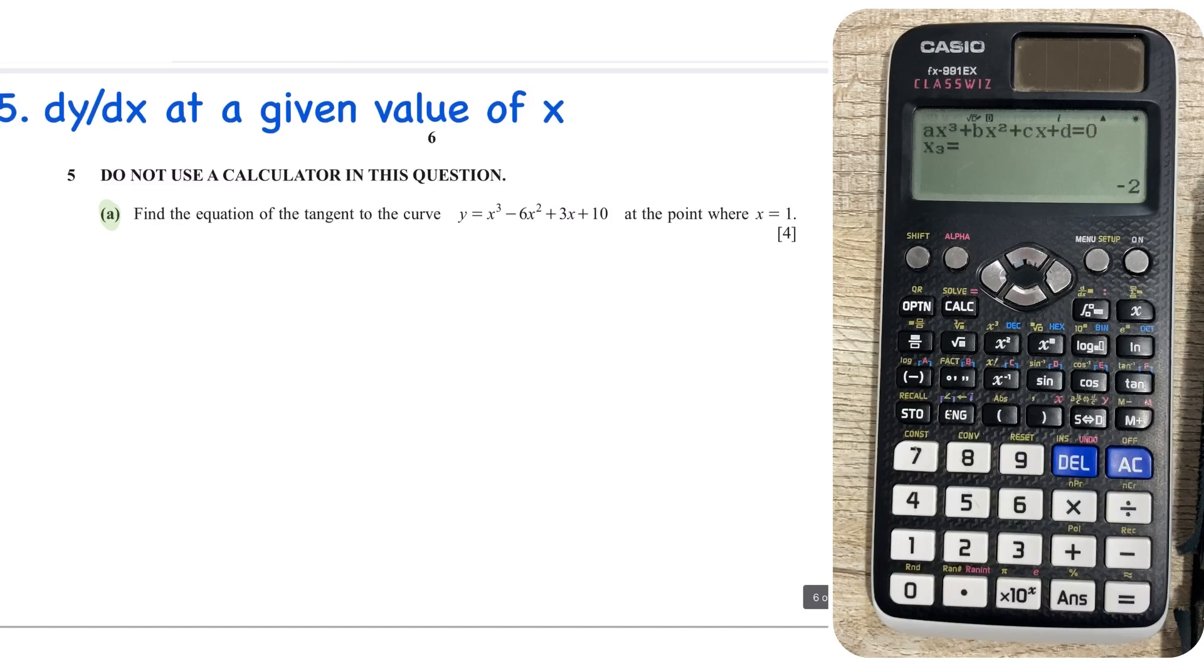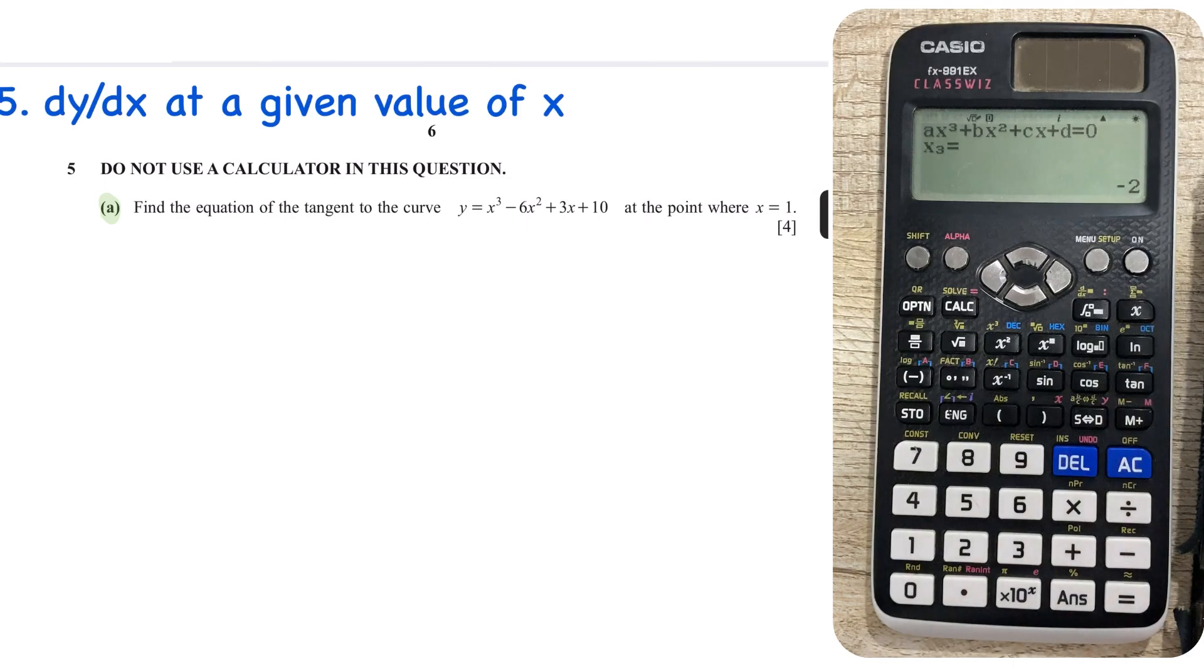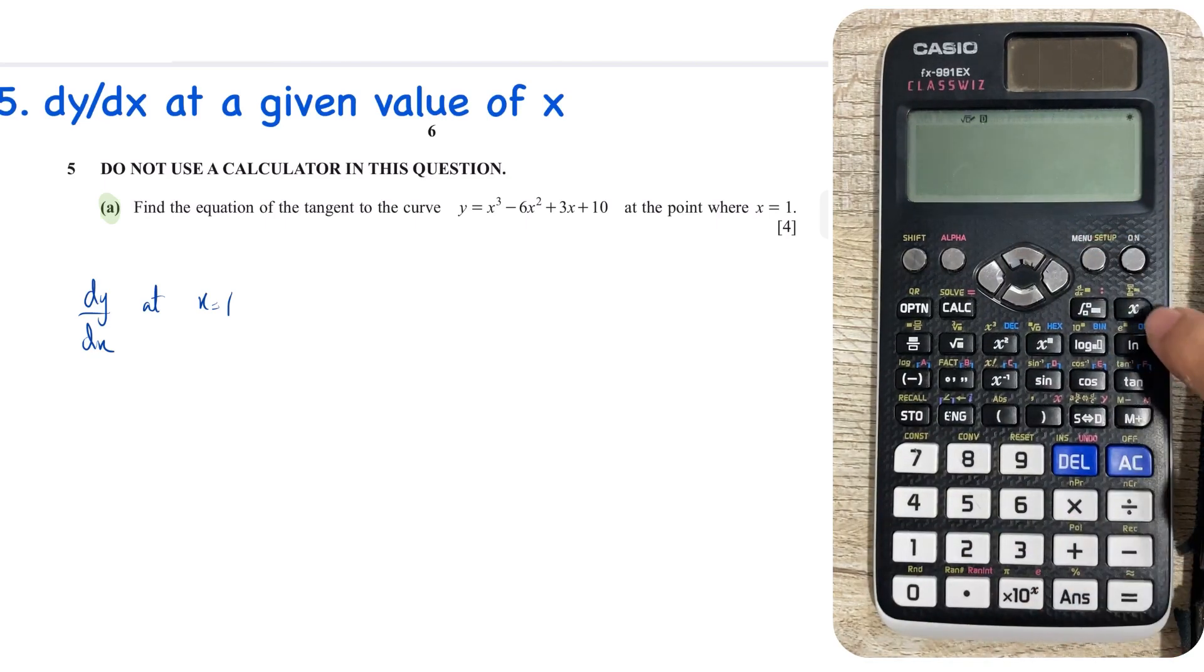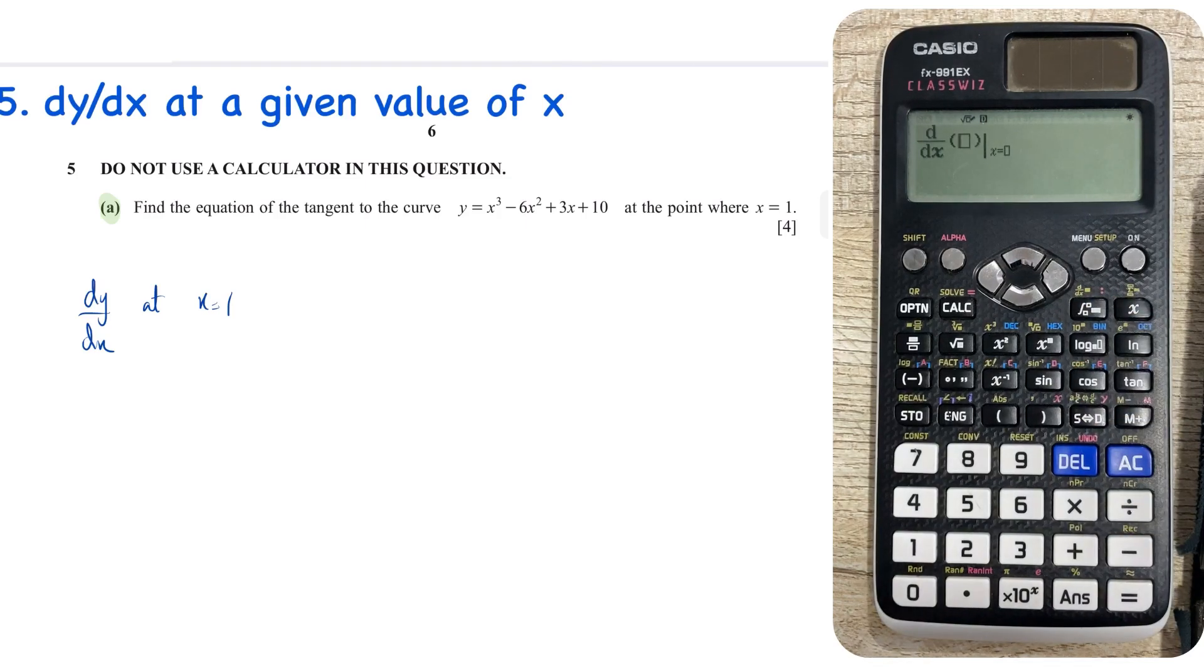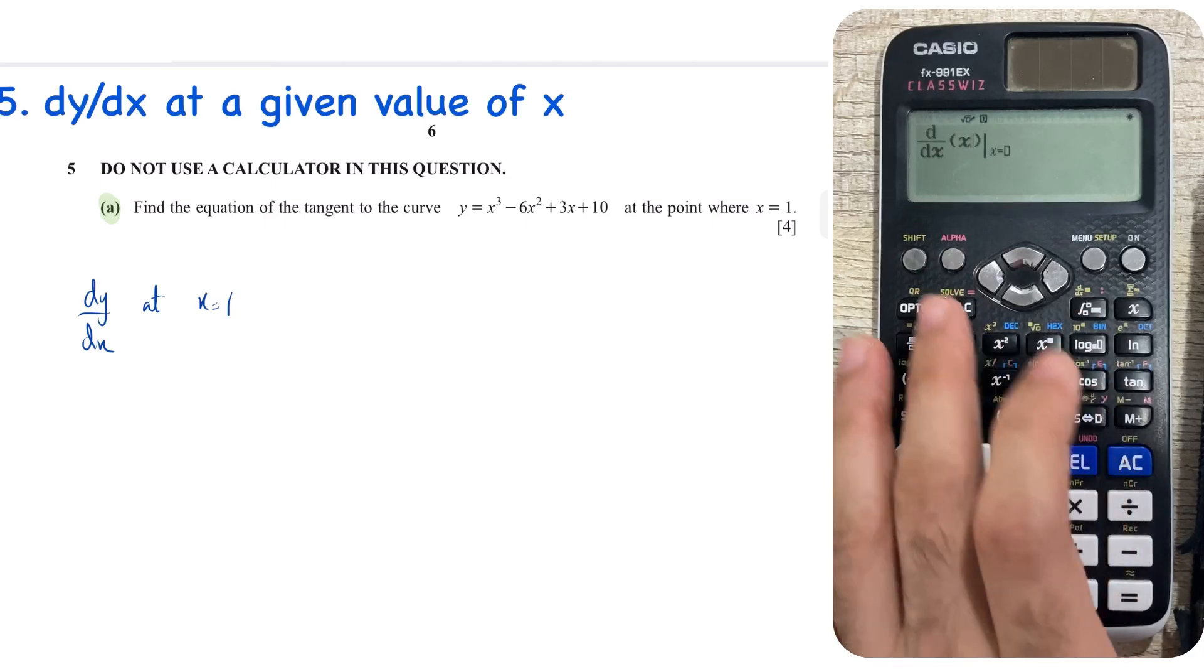Now this is actually one of my favorites, okay. It's dy/dx, but you can actually find out the differential of any function at a given value of x. So it says find the equation of the tangent to the curve y equals x cubed minus 6x squared plus 3x plus 10 at the point where x equals 1. So that means we need to find out dy/dx at x equals 1. So what I'm going to do is, I'm going to first of all go back to normal, okay, then press this key, but before that make sure to press shift. So if you press shift and then if you press this key, you can see that you have something like this. Now remember to put the pre-differentiated equation, the equation of the curve, okay? So that's exactly what I'm going to do, x cubed,